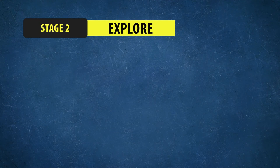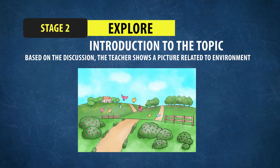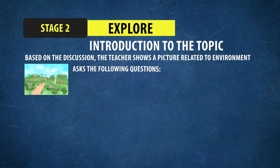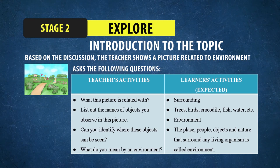Then comes the second stage, Explore. Here we introduce the topic. Based on the discussion, the teacher shows a picture related to the environment and asks specific questions. This is the teacher activity. The questions include: What is this picture related to? List out the names of objects you observe in this picture. Can you identify where the objects can be seen? What do you mean by the environment? Students are asked to answer these questions and come to the chalkboard to write their answers. The teacher then introduces today's topic after discussing with the learners.